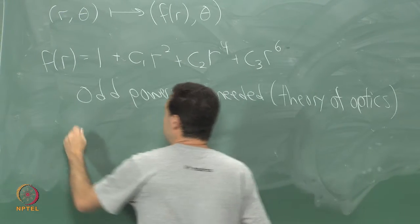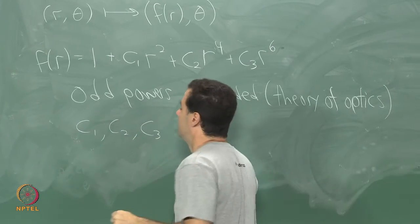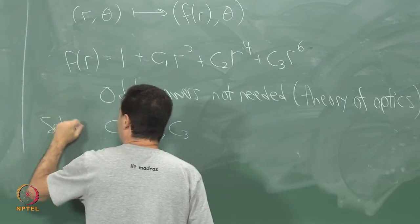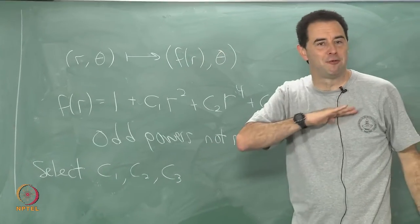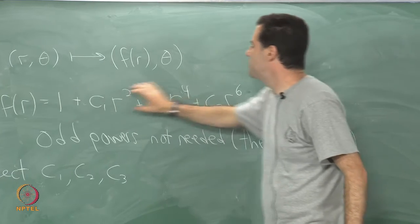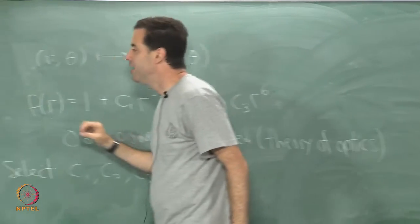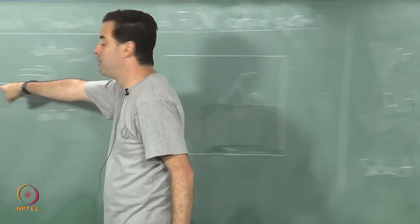Basically what you do is you choose c1, c2, and c3. You select c1, c2, and c3 and then you keep these fixed forever. You keep these fixed. This is some kind of radial distortion function. It performs some kind of stretching that cancels off this barrel distortion.